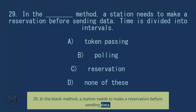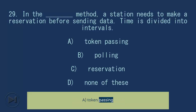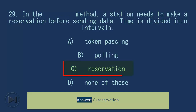Question 29: In the blank method, a station needs to make a reservation before sending data; time is divided into intervals. A) Token Passing, B) Polling, C) Reservation, D) None of these. Answer: C) Reservation.